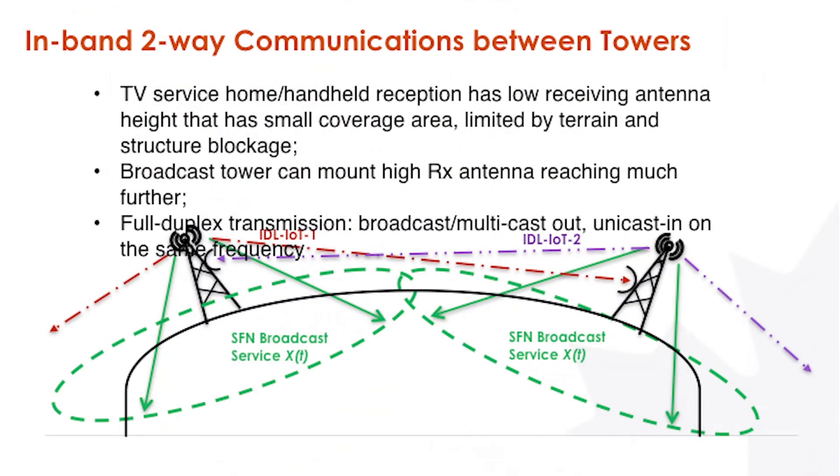You can see each tower can broadcast the multimedia system out while receiving information from other towers — for relay, backhaul, broadcasting out, and single-in systems. The consumer broadcasting service, because of its low receiving tower, doesn't have very large coverage. But this tower has a very high tower, so we can make this work two-way.